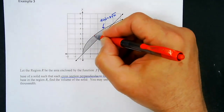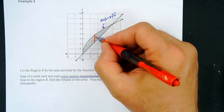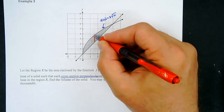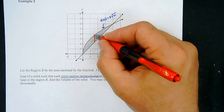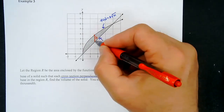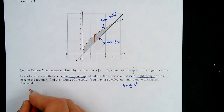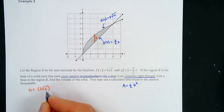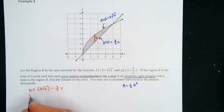The base is perpendicular to the x-axis — top minus bottom: 3√x − (3/2)x. The height could be on either side; it doesn't matter because you'd get the same volume. So the base b = 3√x − (3/2)x.